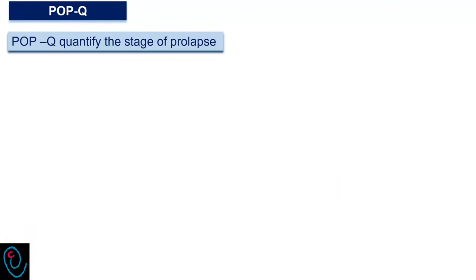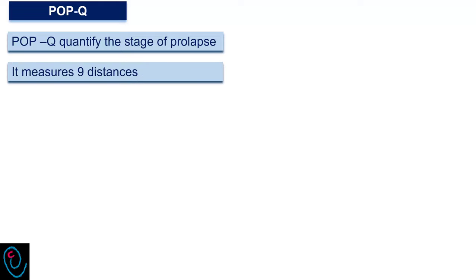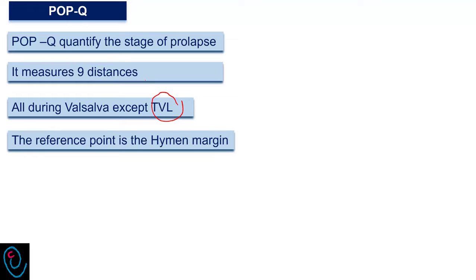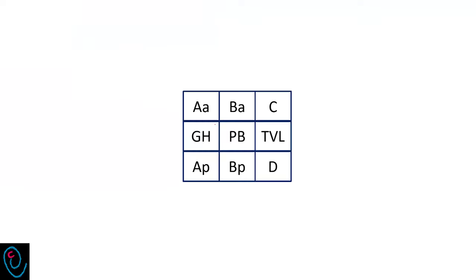Pelvic organ prolapse quantification, known as POPQ, quantifies the stage of prolapse. It measures 9 distances. All distances are measured during Valsalva, except one distance known as total vaginal length, or TVL. The reference point for all measurements is the hymenal margin, and the measured distances can be recorded on a 3x3 grid.